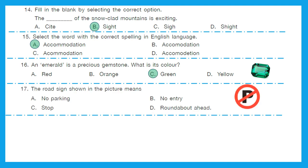Question 17: The road sign shown in the picture means — is it no parking, no entry, stop, or roundabout ahead? Here P means parking, and we are crossing the P, which means it is no parking. Option A is the right answer.